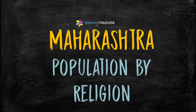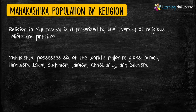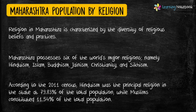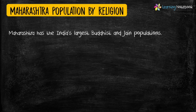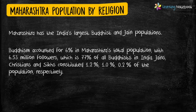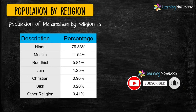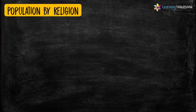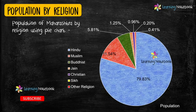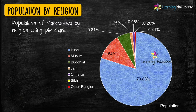Now the next idea for your Maths Art Integrated Project is Population of Maharashtra by Religion. Students, a pie chart is another beautiful way to represent the given data. So you can take help of a pie chart to show Population of Maharashtra by Religion.